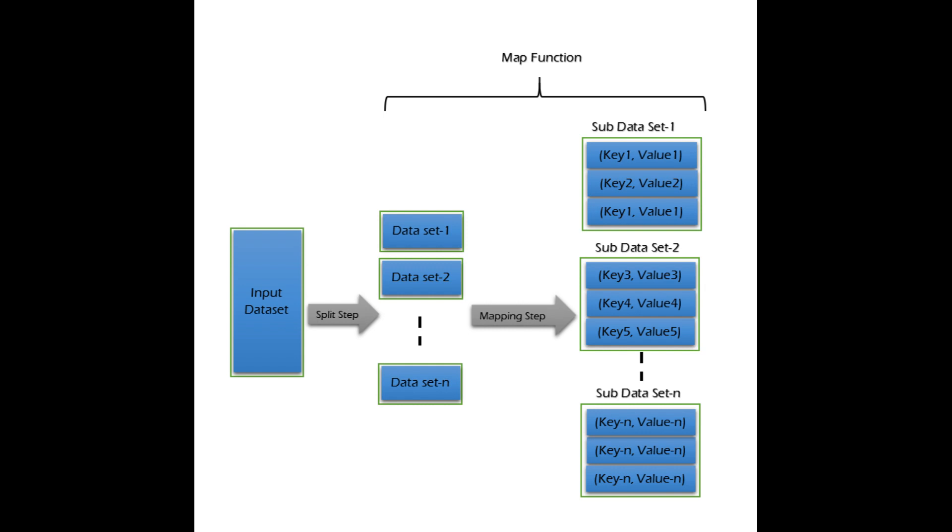Shuffle and Sort: During the shuffle and sort phase, the intermediate key-value pairs are grouped by their keys and the keys are sorted. This ensures that all values associated with a specific key end up together, even if they originated from different nodes.